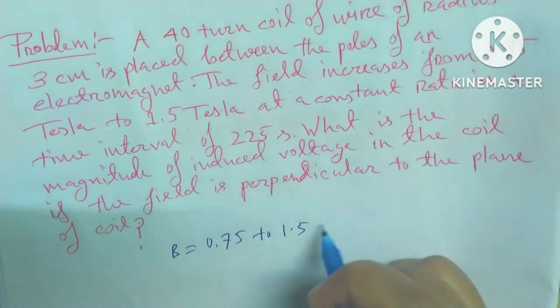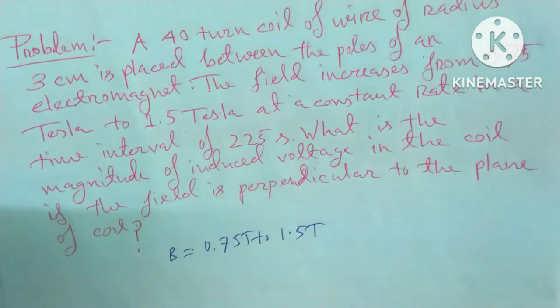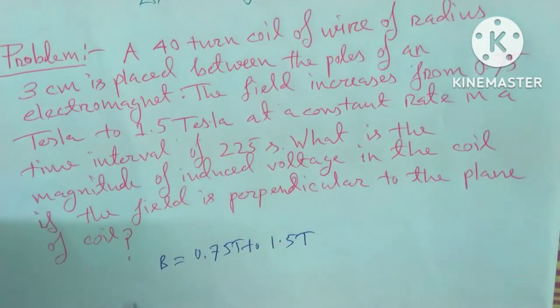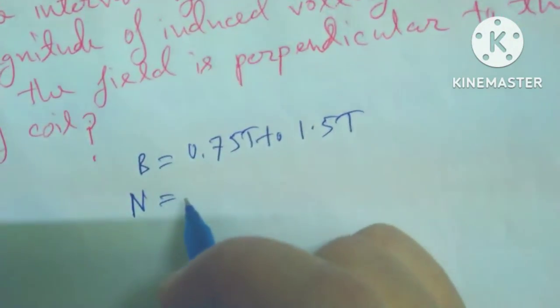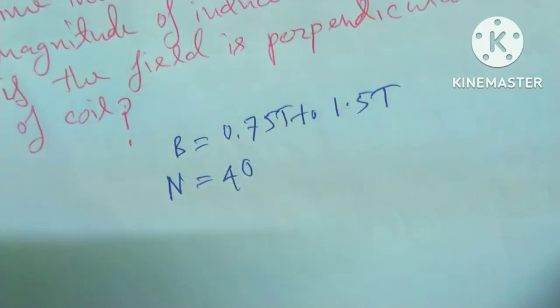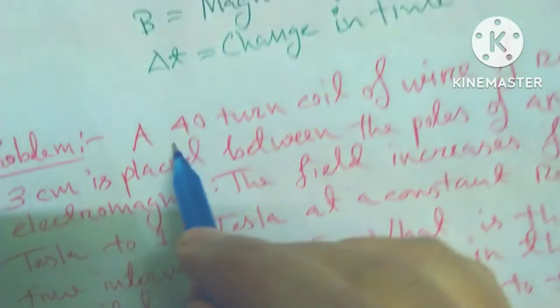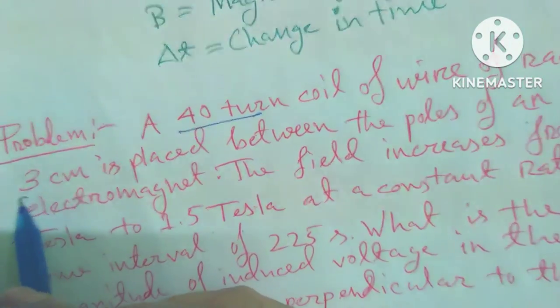So B is equal to 0.75 up to 1.5 Tesla difference, okay. And 40 turns, so N equals to 40. And we see that this is the marking I mark out, and radius is 3 centimeter, R equals to 3 centimeter.